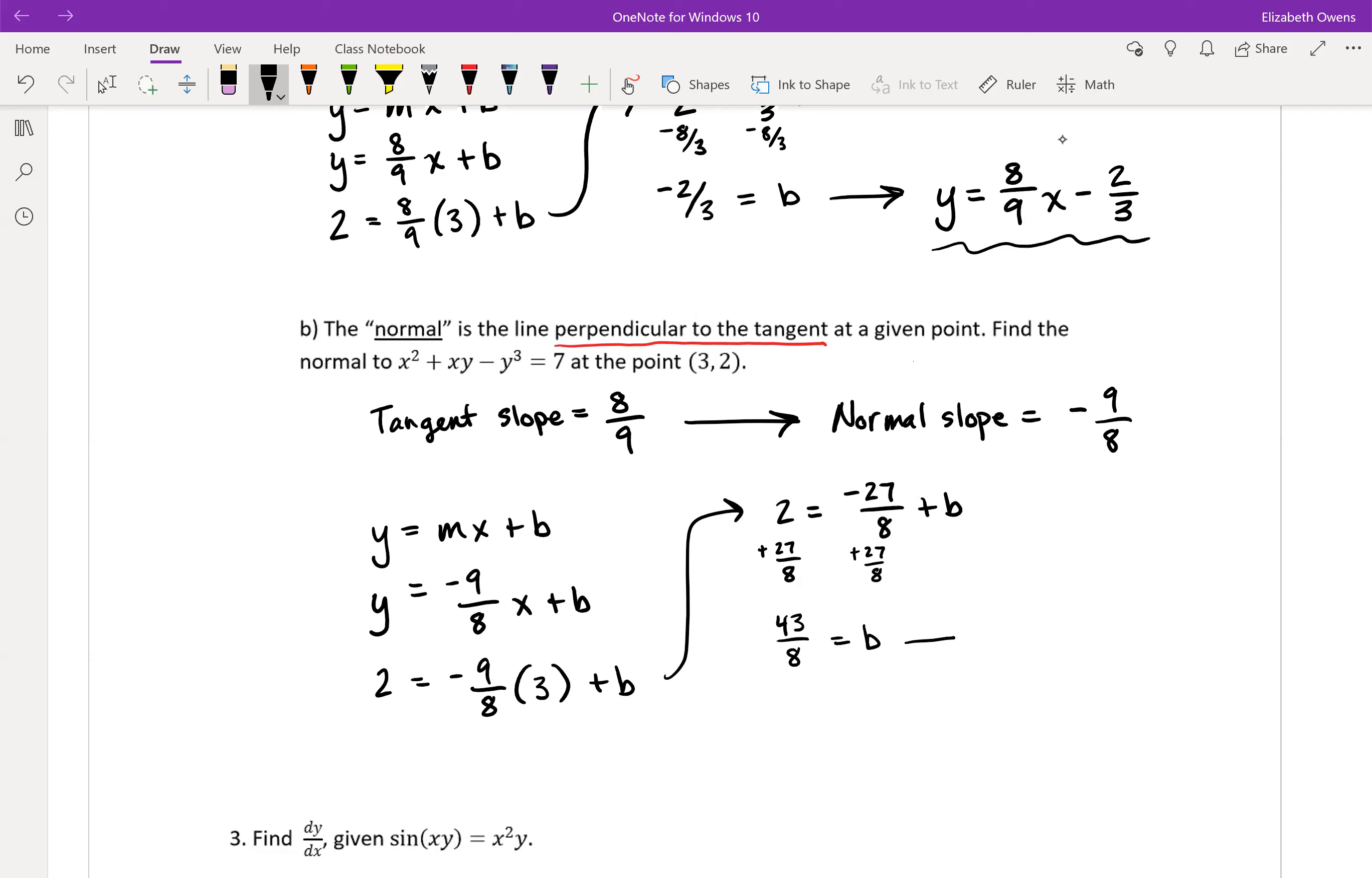Not very pretty, but this happens. So our normal line is y = -9/8 x + 43/8.